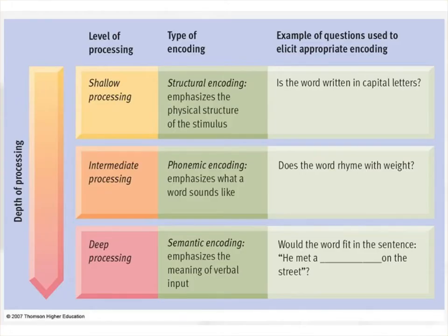We also process information in deep or shallow ways. Deep processing is the processing of information with consideration of its meaning and connections, of its significance. It requires lots of rehearsal and practice, and most often requires the connection of new information with information previously learned — and it leads to better memories. In contrast, shallow processing requires less rehearsal, as it just uses surface characteristics to process information, such as visual appearance, or structural processing, or auditory characteristics — how something sounds, or phonemic processing — to learn or remember something.